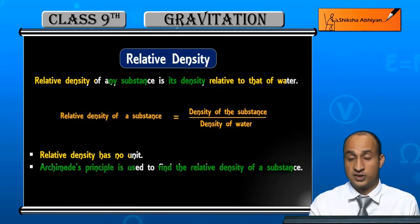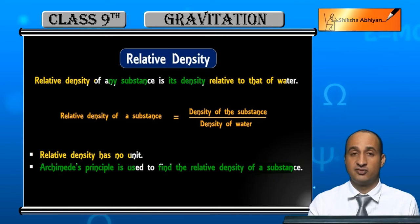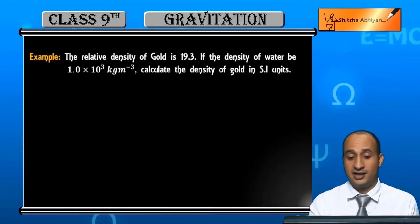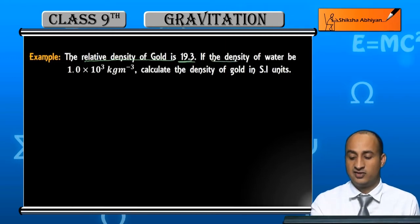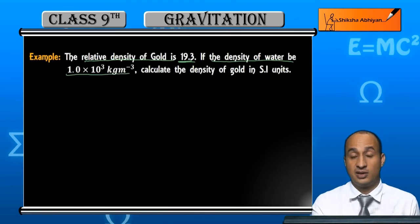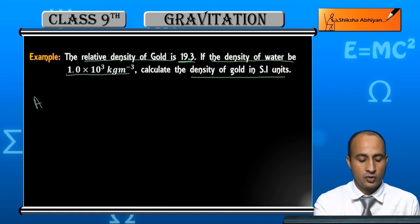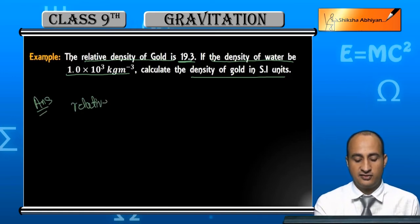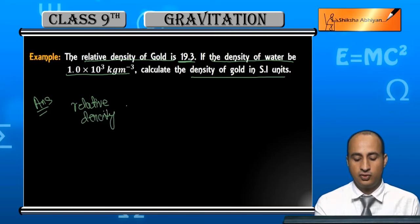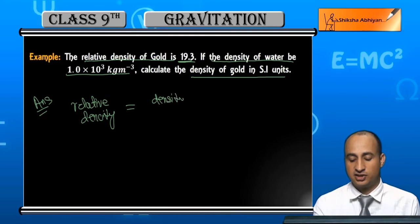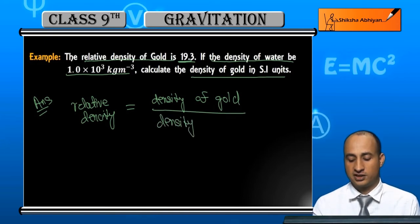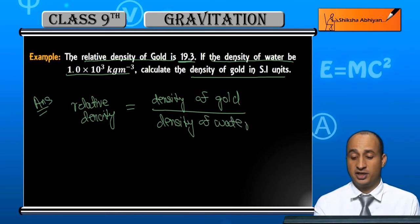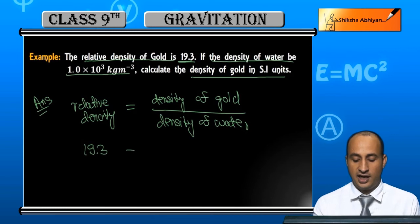Relative density is also found using Archimedes' principle. Ab ek example deta hoon jahan hum relative density nikalenge. Relative density of gold given hai 19.3, and density of water is 1.0 × 10³ kg per meter cube. We need to calculate the density of gold. Relative density equals density of gold upon density of water.